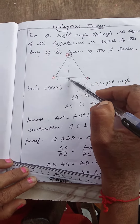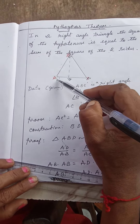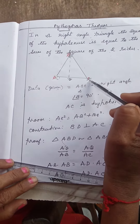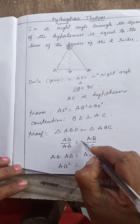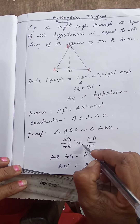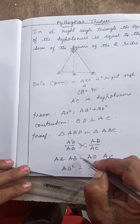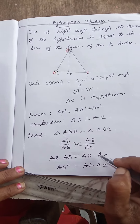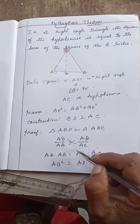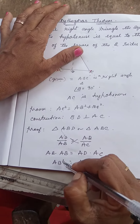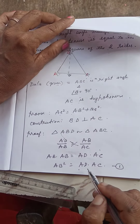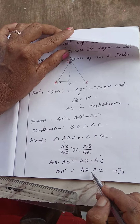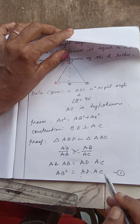AD/AB is equal to AB/AC. We have to do cross multiplication, so AB into AB equals AD into AC. AB into AB is AB square. So AB square is equal to AD into AC. This is equation number 1.